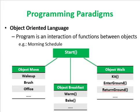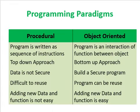Using the same morning example, the definition of object-oriented languages is that a program is an interaction of functions between objects. Here, different objects are defined, and objects contain different functions which will execute. If we want to maintain a morning schedule, we have three objects, each maintaining their own data and exposing only the functions we want to perform.